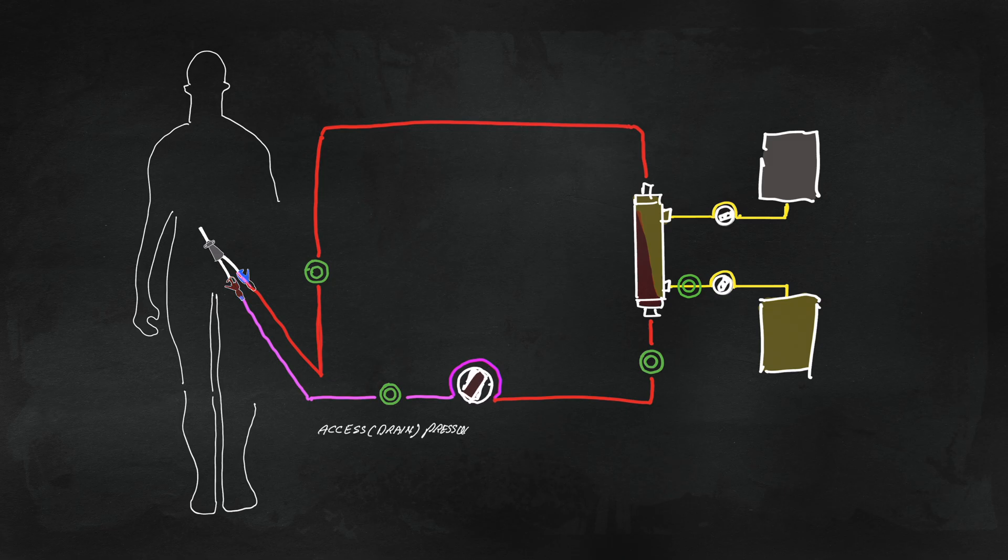The first pressure pod on the bloodline is the access or drain line pressure pod. The baseline pressure here is a function of catheter characteristics and prescribed blood flow rate. Typically it's less than 100 in CRRT setups.